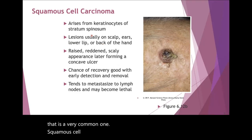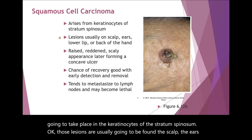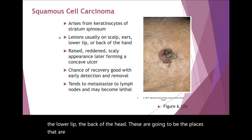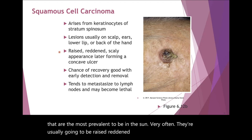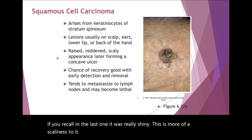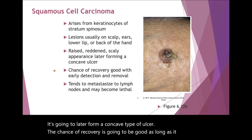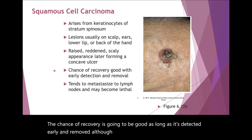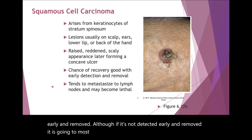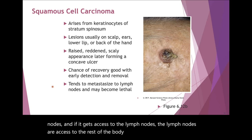Squamous cell carcinoma takes place in the keratinocytes of the stratum spinosum. Those lesions are usually found on the scalp, the ears, the lower lip, and the back of the head — places most prevalent in the sun. They're usually raised, reddened, and more scaly, and later form a concave type of ulcer. The chance of recovery is good if detected early and removed. However, if not detected early, it is going to metastasize into the lymph nodes, and if it gets access to the lymph nodes, it has access to the rest of the body, which is when it can become lethal.